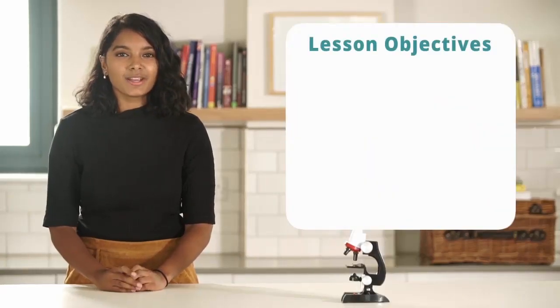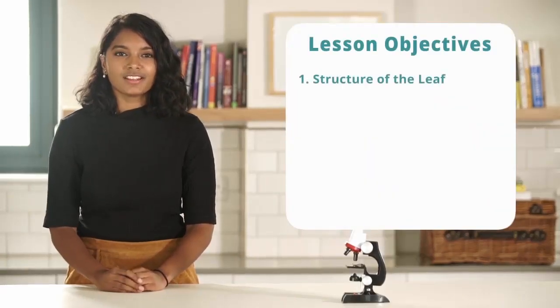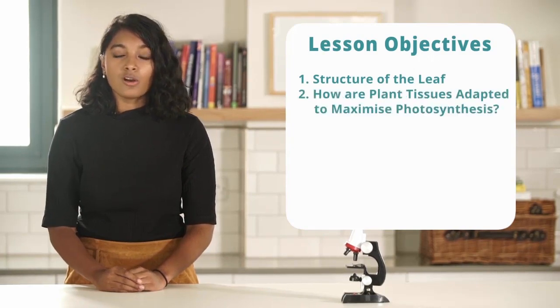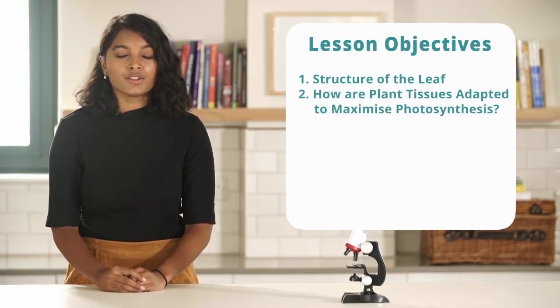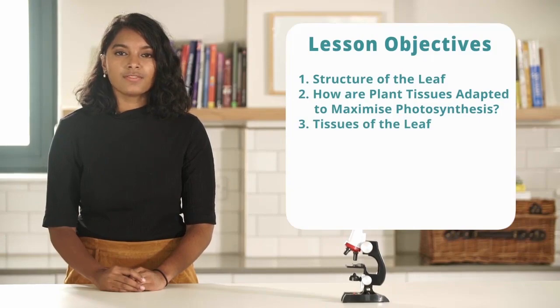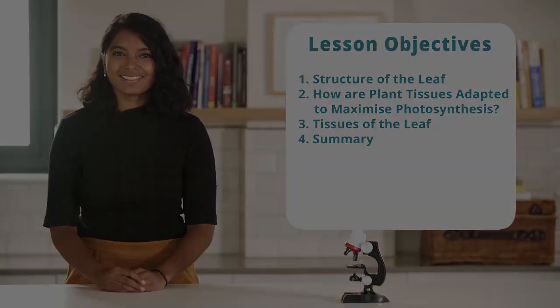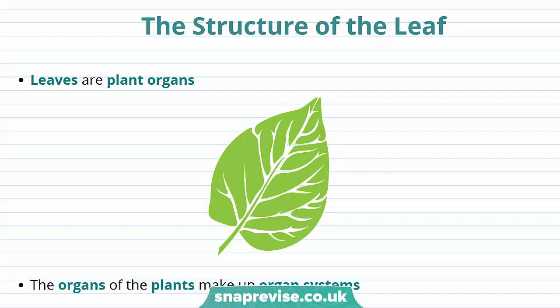Hi guys, in this video we'll be discussing the structure of the leaf, how plant tissues are adapted to maximise photosynthesis, the tissues of the leaf, and finally a summary. In the video introduction to photosynthesis I discuss how plants make their own food. In this video I'll be talking about the structure of the leaf and how this lets a plant carry out photosynthesis.